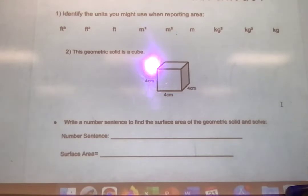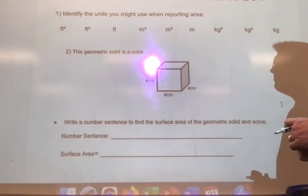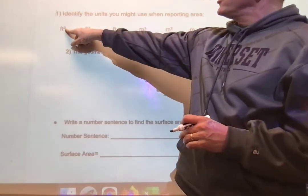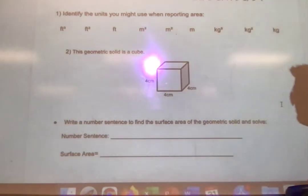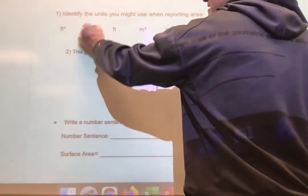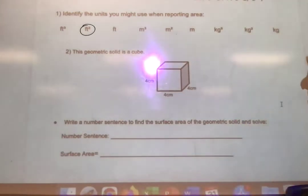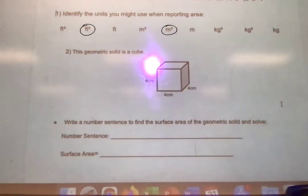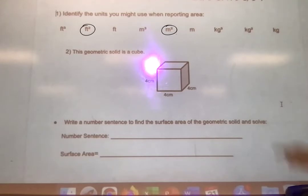The first thing we're going to do is identify the units you might use when reporting area. I know for area we use square feet or square meters - things dealing with distance. We don't cube it like here; this would be volume, cubic feet. So we know it has to be square. We've been doing area a long time, so we have square feet, we could have square meters which would be quite a bit bigger.